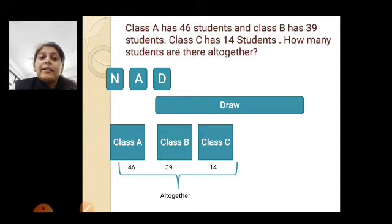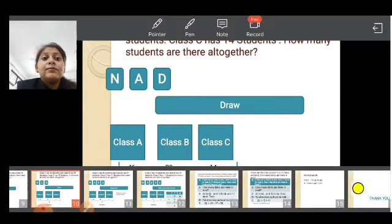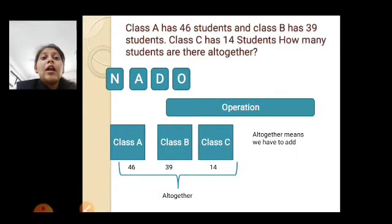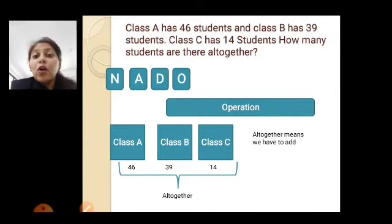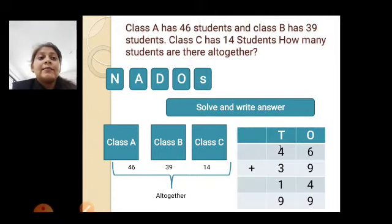So here, class A, class B and Class C. Class A has 46 students, 39 students and 14 students. Now, we have to find all together. Now, operation. So, here is the keyword all together. So, we have to add all three numbers. So, now, for solving, we have to add 46 plus 39 plus 14.